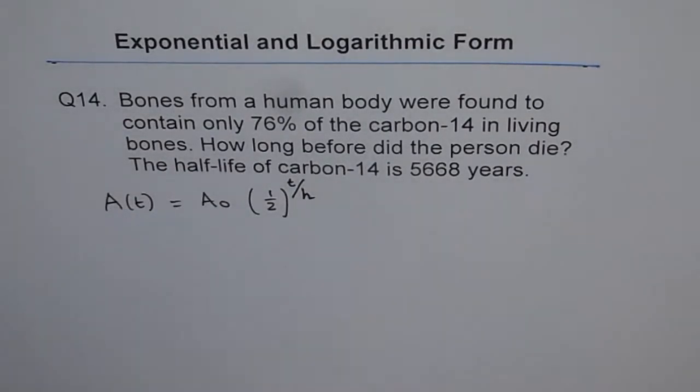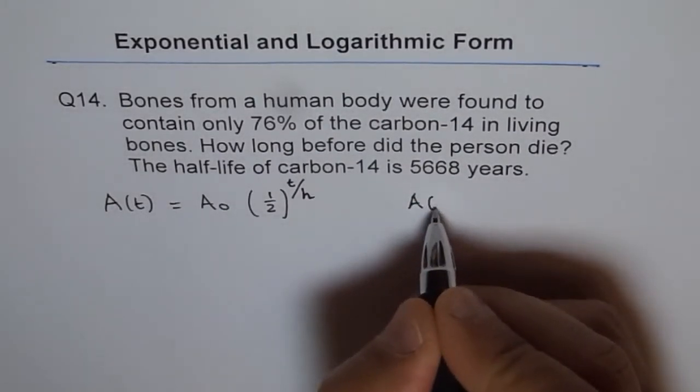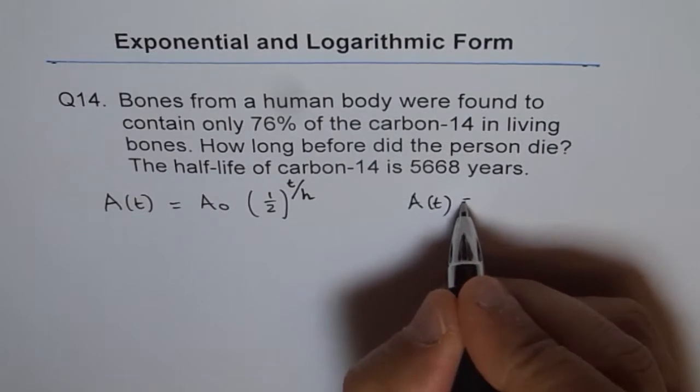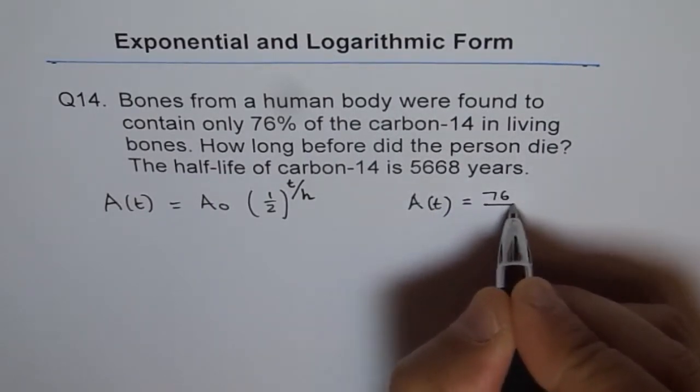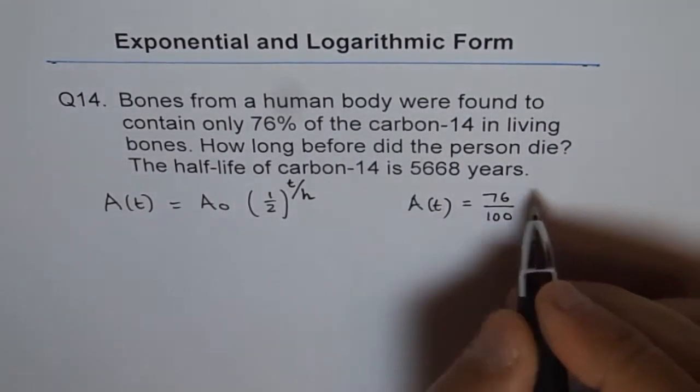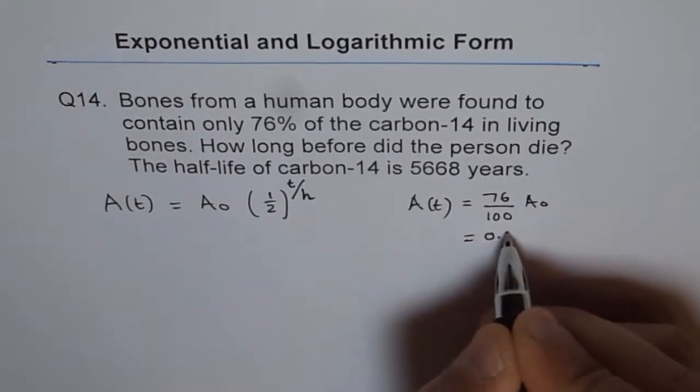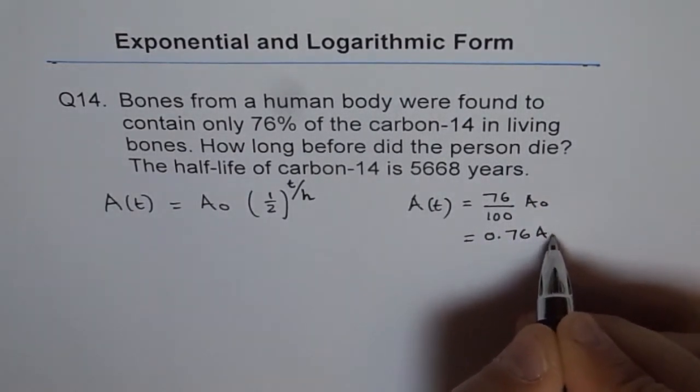Now, what is A(t)? We know A(t) is 76% of A₀. So, A(t) is 76%, means 76 over 100 of A₀, which is 0.76 of A₀.